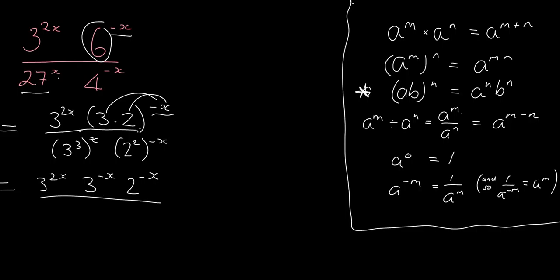And then at the bottom, I am going to be using this rule here. So it is 3 to the 3 times x, so it's 3 to the 3x. And it's 2 to the 2 times negative x, so it's negative 2x.